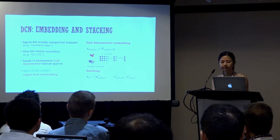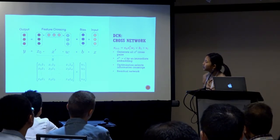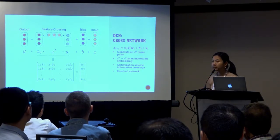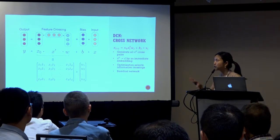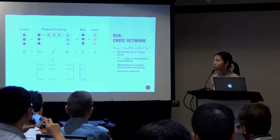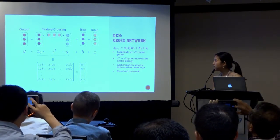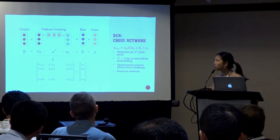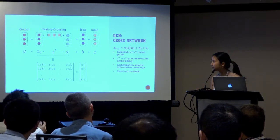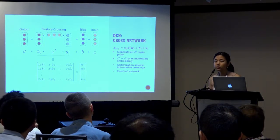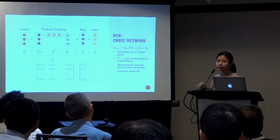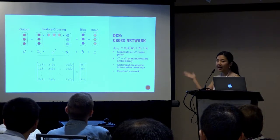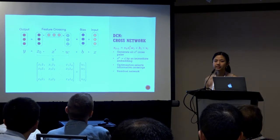Let's move on to the cross-network. The picture on the top shows one layer in the cross-network, where x is the input, y is the output, b is a bias term, and w is the weight vector. In the feature crossing part, the input x is interacted with the original input x0 to generate high-order terms. Specifically, it generates all d-squared cross pairs, as shown in the matrix, and all these crosses are then projected to a d-dimensional space. The optimization procedure selects those informative crossings. In practice, we multiply x and w first for efficiency. The cross-network also shares the spirit of a residual network, where the input x is added back to the output.